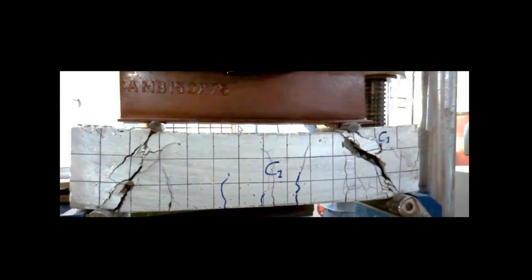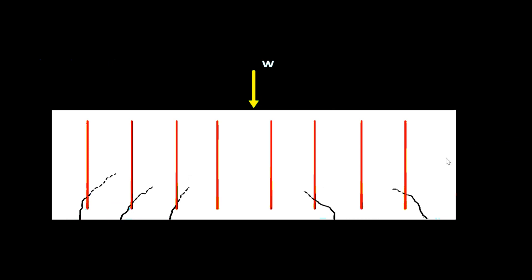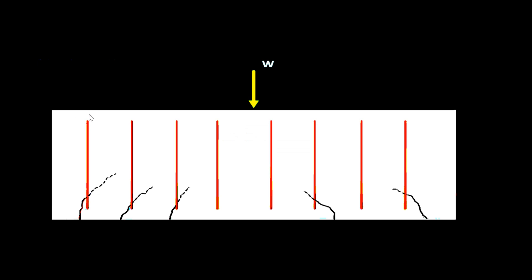Suppose you have a simply supported beam and you apply a point load W kilonewtons. The beam deflects and cracks form in a characteristic pattern, because concrete is a brittle material. I have done an experiment in the lab with a two-point load and you can see the cracks developed. These cracks can be arrested by providing vertical stirrups — the stirrups resist the developing crack by providing a resisting force.